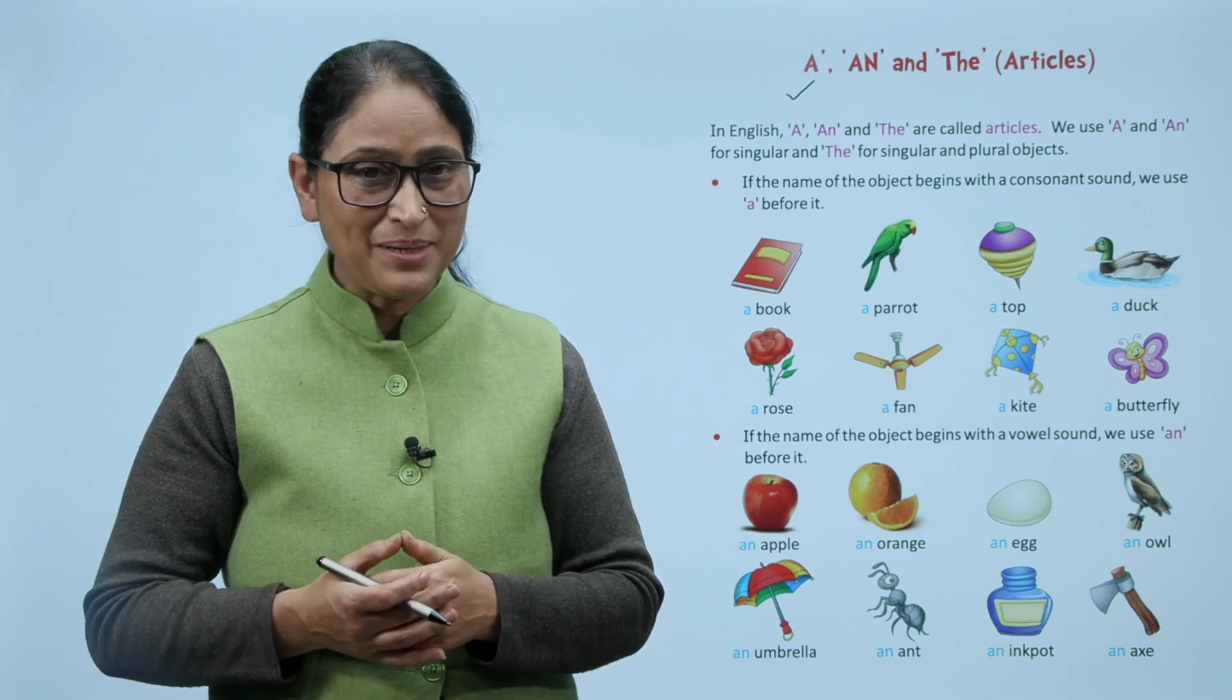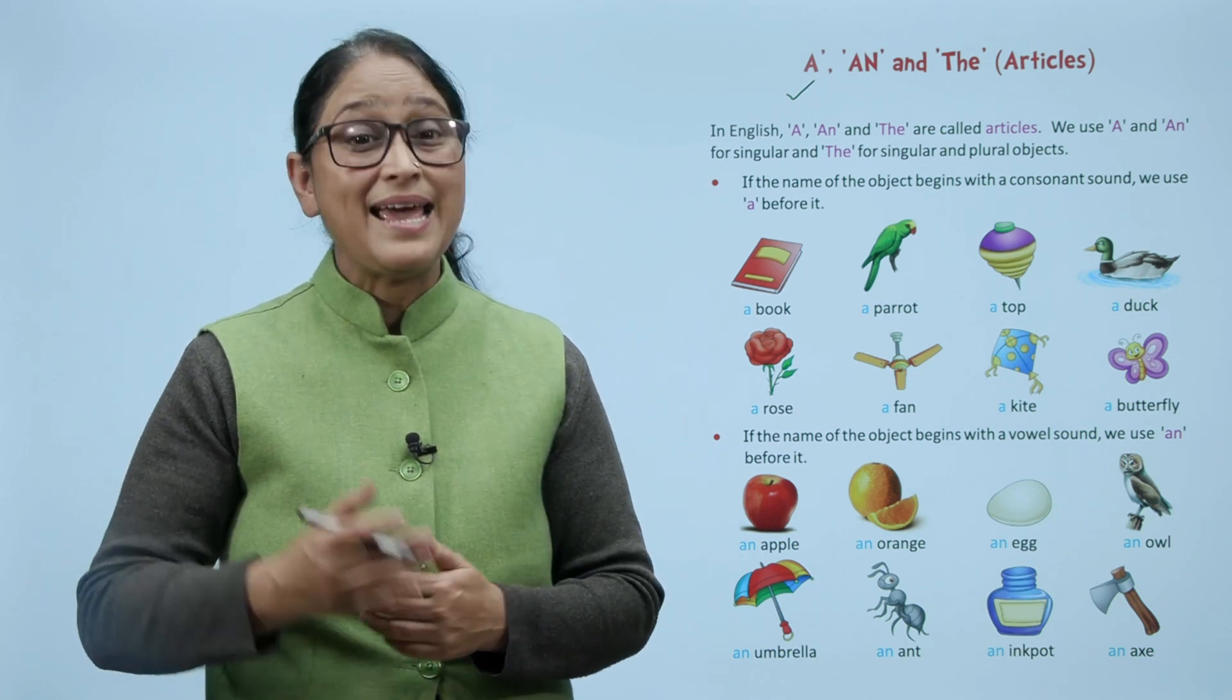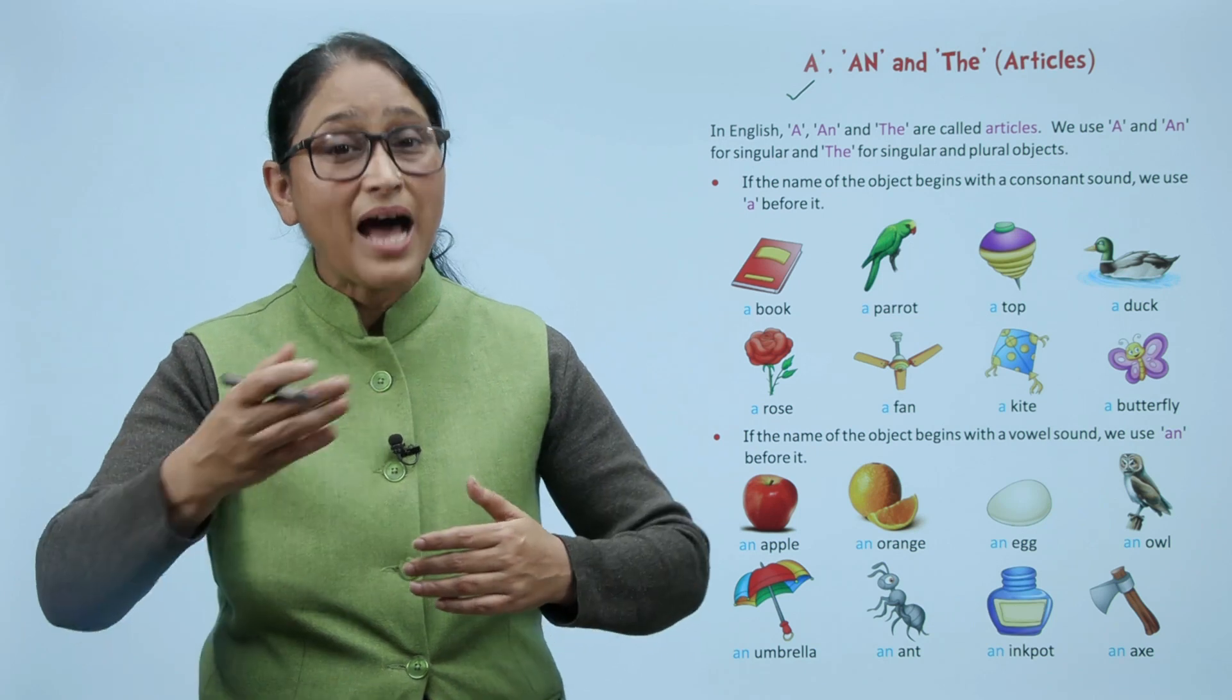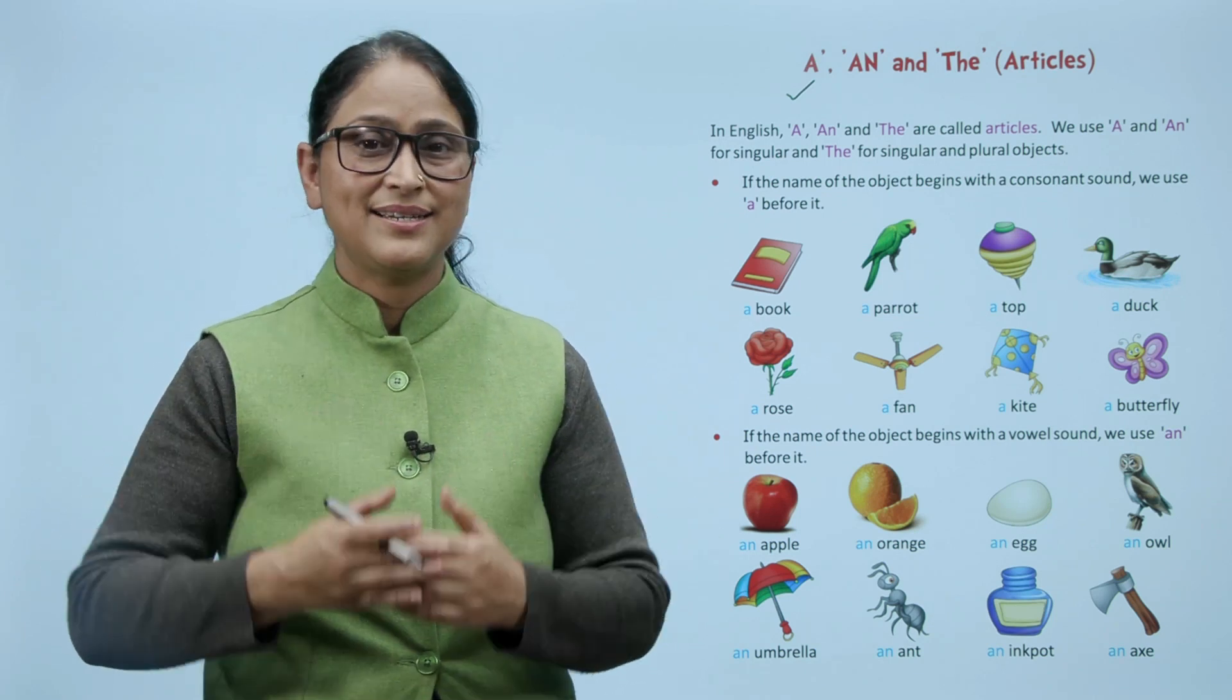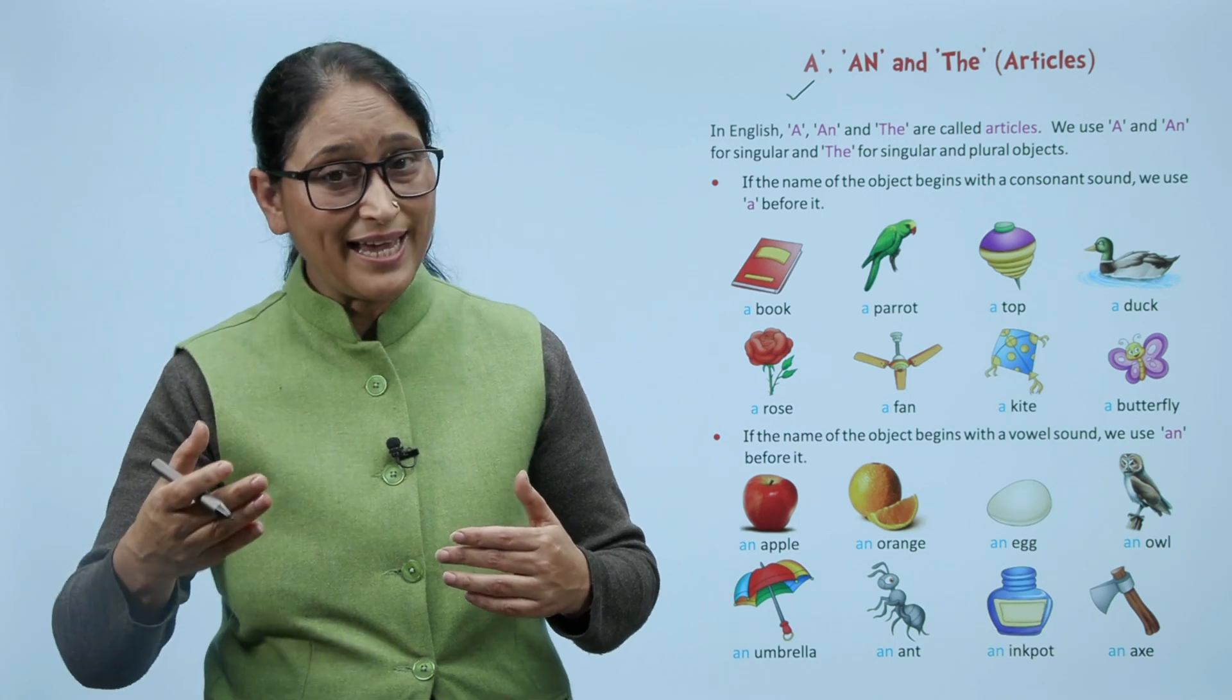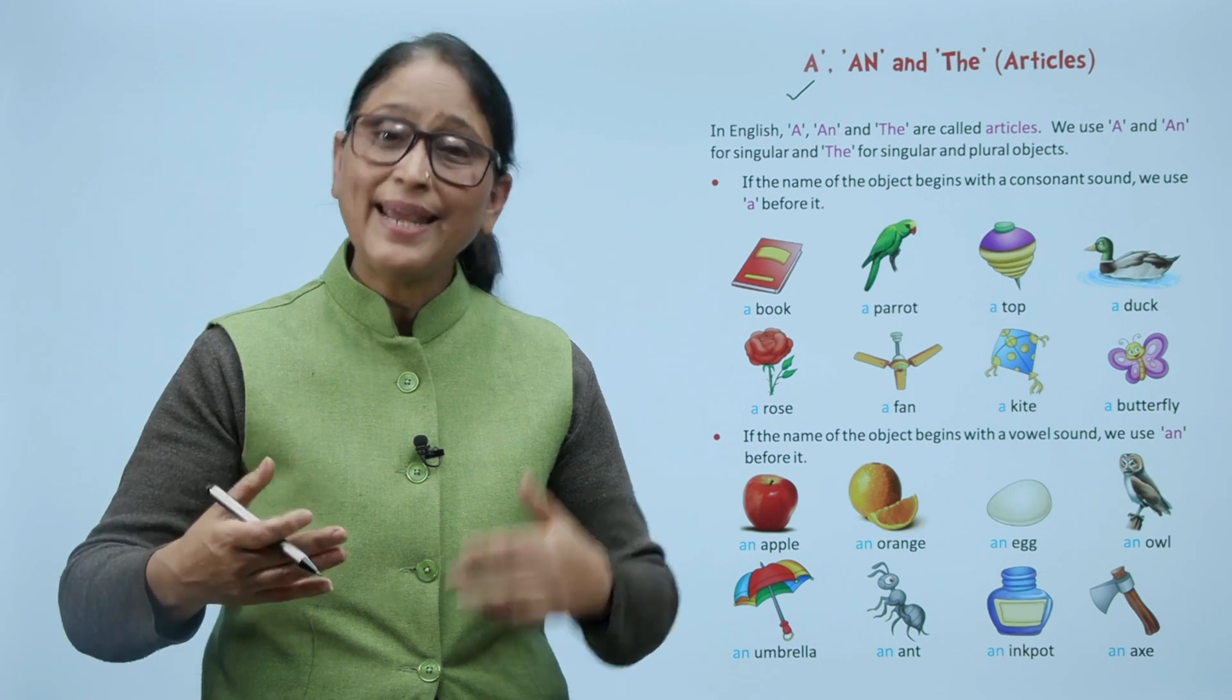For example, apple - apple se pehle kya use karenge? An apple. An orange, An egg, An owl, An umbrella, An aunt, An inkpot, An X. These words, their first letter is kya hai? Vowel. So vowel se pehle, An.